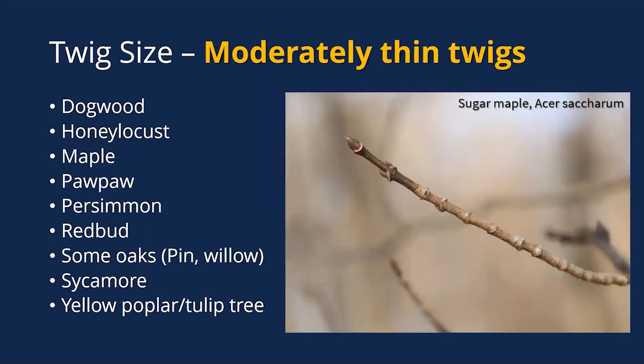Moderately thin twigs — still fairly thin but not extremely so — include dogwoods, honey locusts, maples, pawpaw, persimmons, redbuds, some oaks particularly pin oaks and willow oaks, sycamore, and yellow poplar.